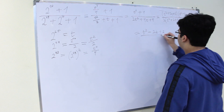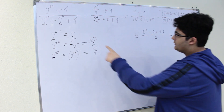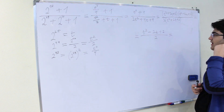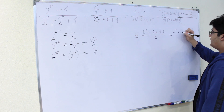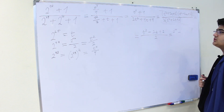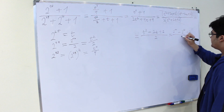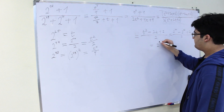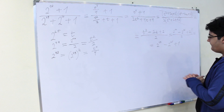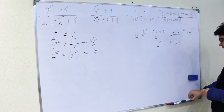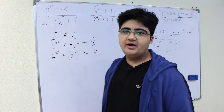Now we know t equals 2 to the power of 25, so substituting back: 2 to the power of 50 minus 2 times 2 to the power of 25 — which gives 2 to the power of 26 — plus 2, divided by 2. This simplifies to 2 to the power of 49 minus 2 to the power of 25 plus 1. So we have simplified the expression and that's the answer.